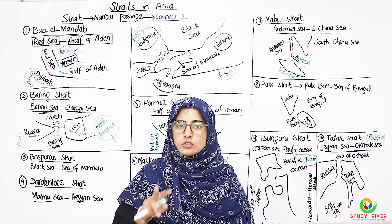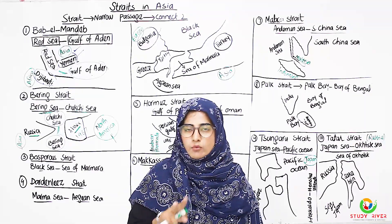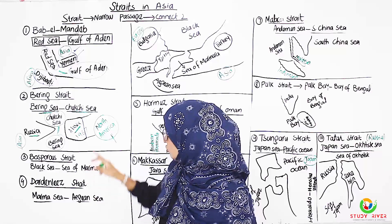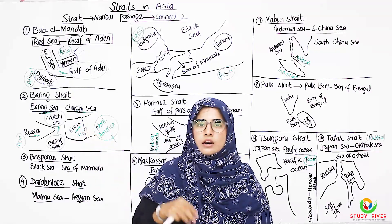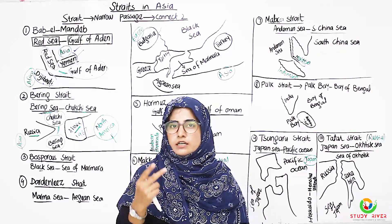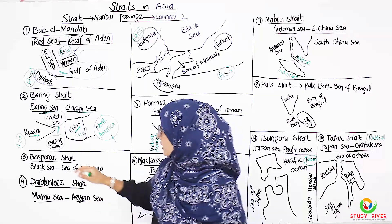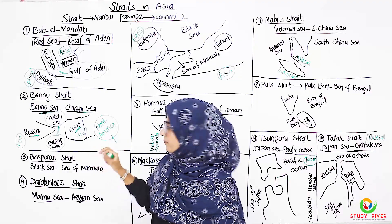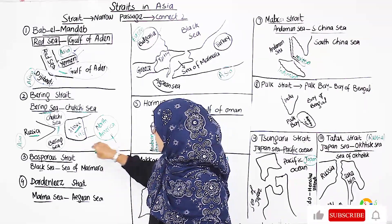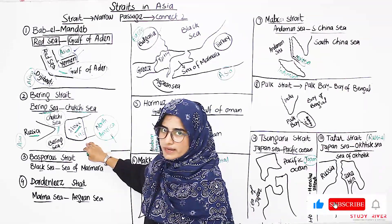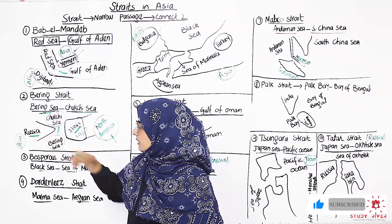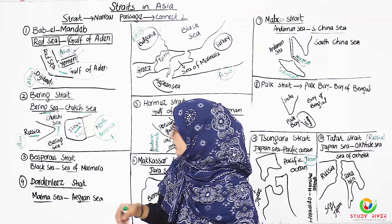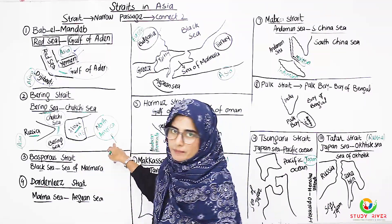To be clear, the Bering Strait connects two water bodies: Bering Sea and Chukchi Sea. If asked which countries, you would say Russia and Alaska, which is part of the United States of America. If asked which two continents, you say Asia and North America.